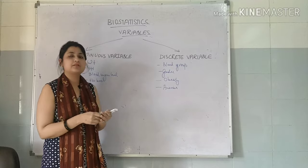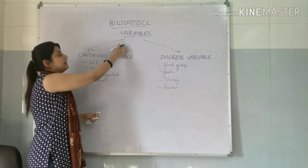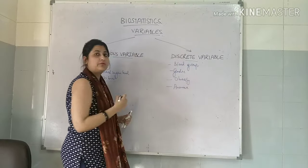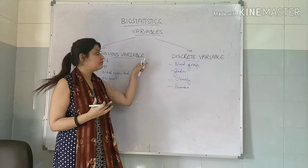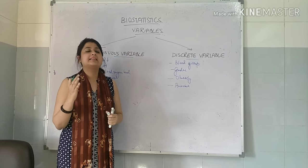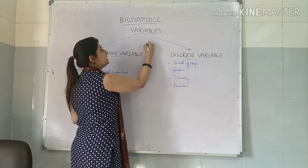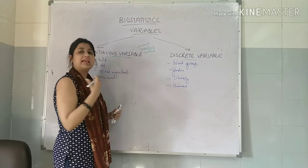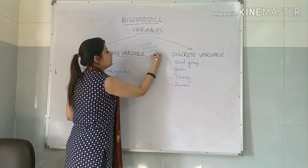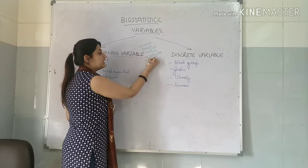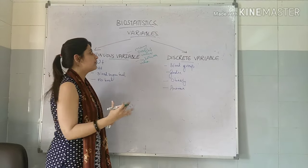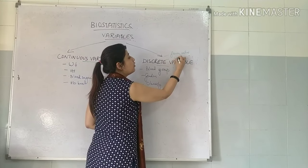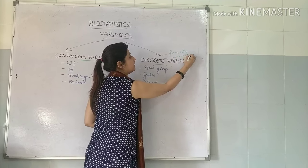The second classification, as you can see I have put it down on the board, is that variables can be classified either into continuous variable or discrete variable. Continuous variable means those variables that can have many possible values and also can take up in-between values. Discrete variables are those which have fewer values and no in-between values.